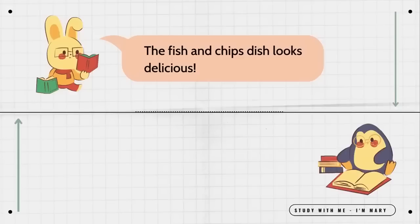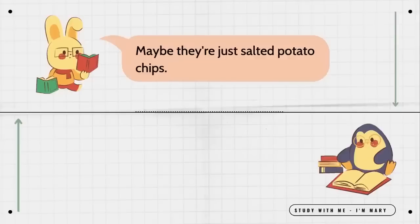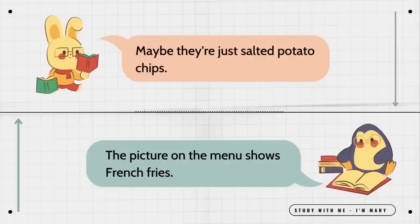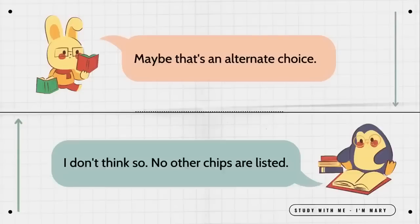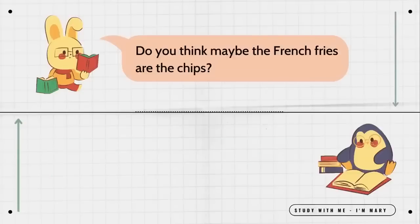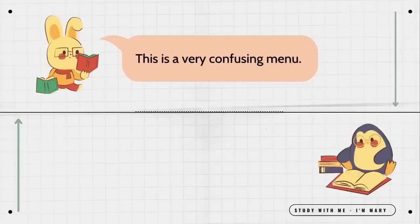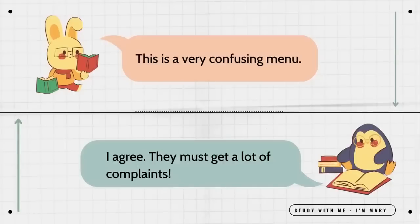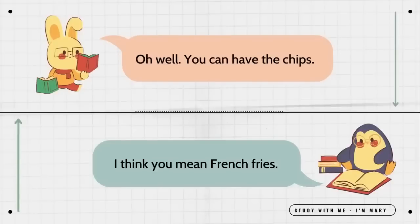The fish and chips dish looks delicious. Do they let you choose the chips you want? Maybe they're just salted potato chips. The picture on the menu shows french fries. Maybe that's an alternate choice. I don't think so. No other chips are listed. Do you think maybe the french fries are the chips? Maybe they're both made from potatoes. This is a very confusing menu. I agree. They must get a lot of complaints. Oh well. You can have the chips. I think you mean french fries.